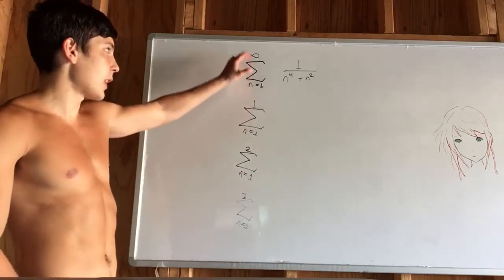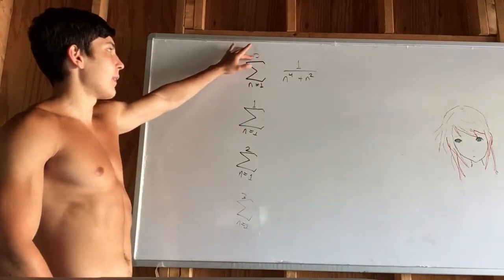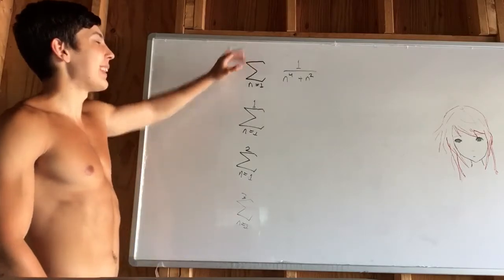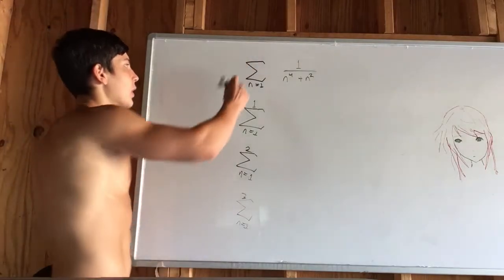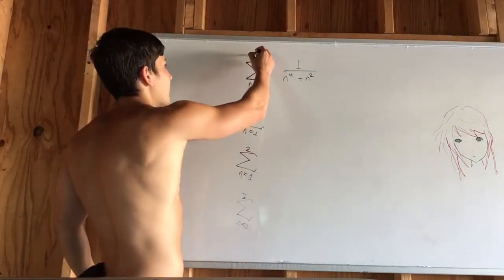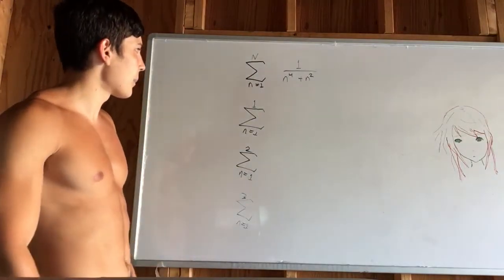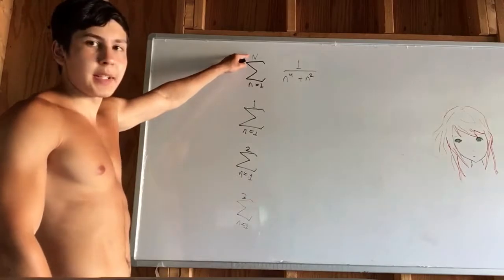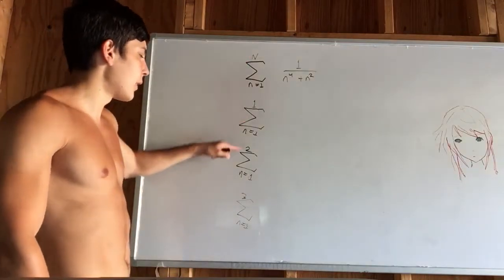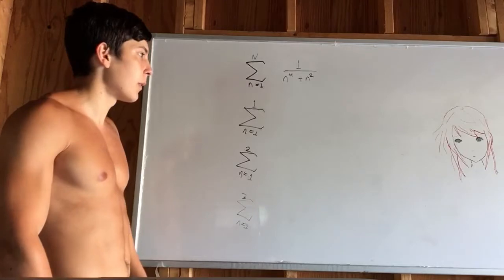what happens is you get to choose what n is. So we're making this into just partial sums. We're not going all the way to infinity. So we're going to just plug in a number for here: 1, 2, 3, 4, 5, and so on.